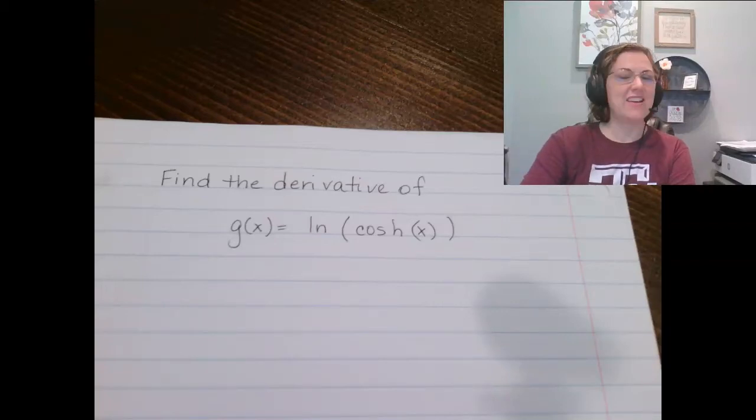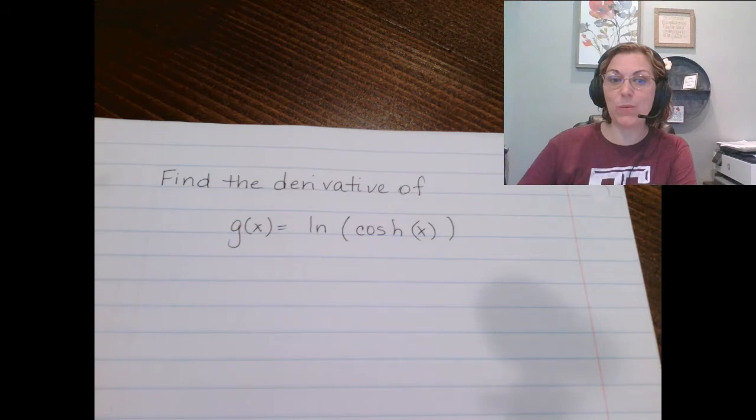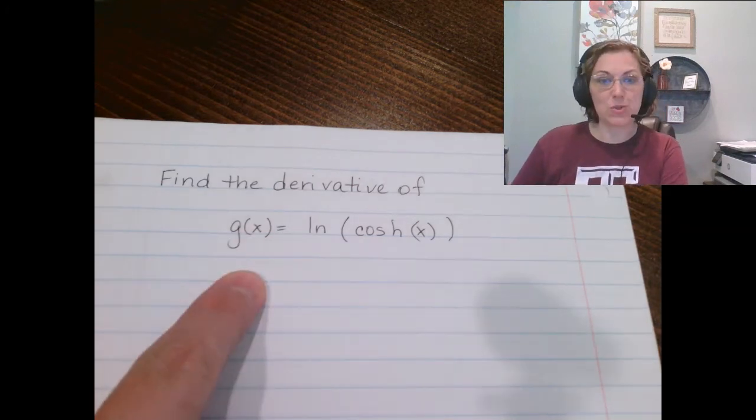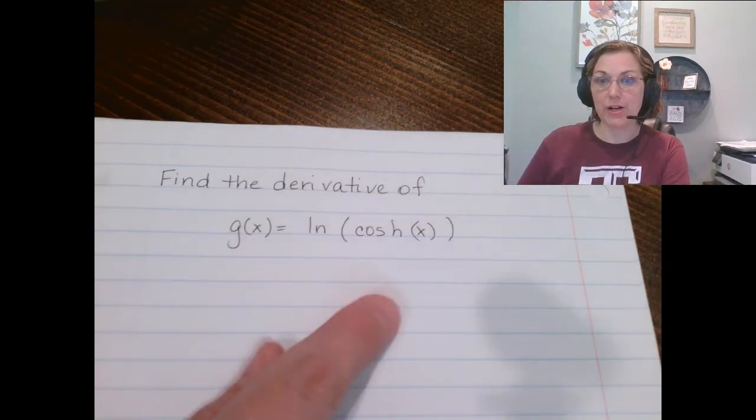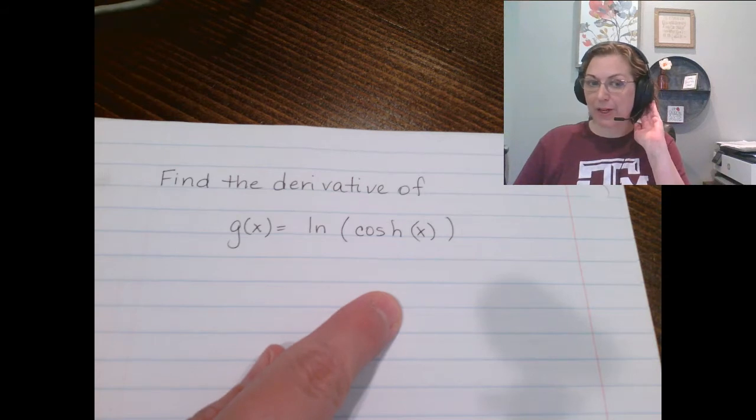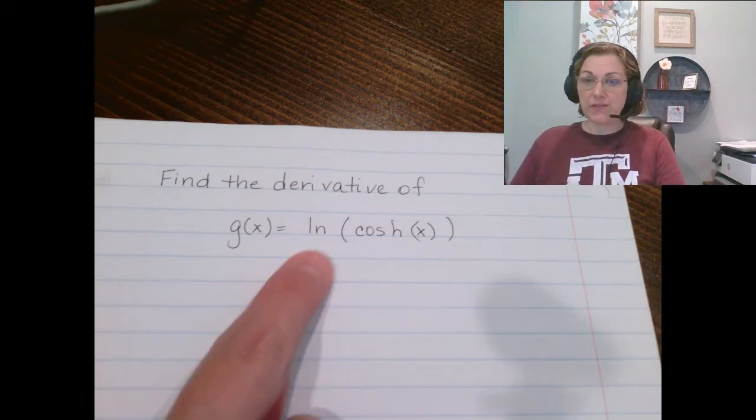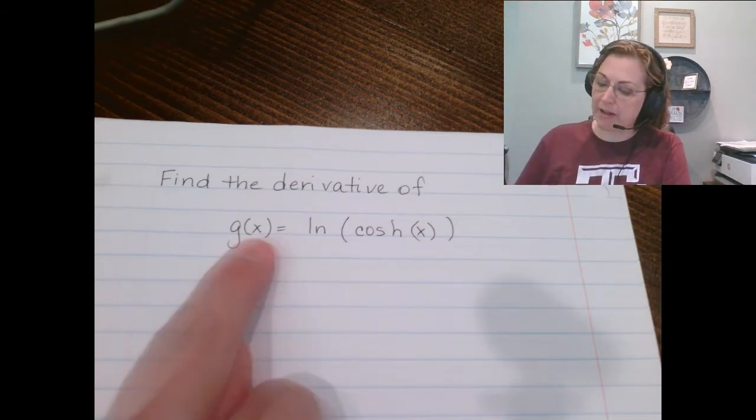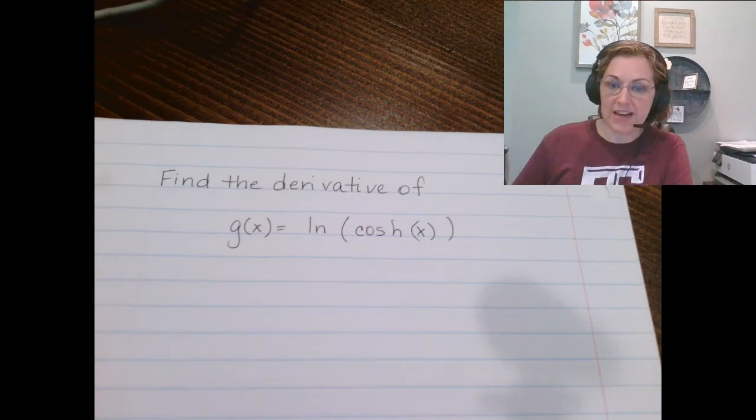Hi there, for this video we're going to look at finding the derivative of the natural log of the hyperbolic cosine. So we have to use chain rule. Let's think about taking the derivative of that natural log.